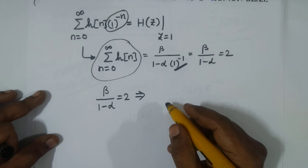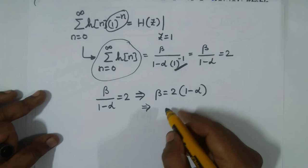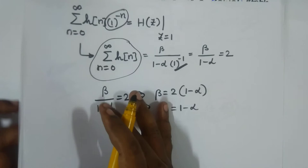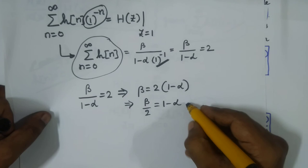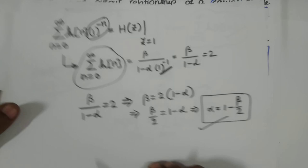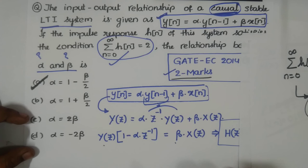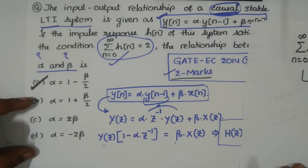From β/(1 − α) = 2, we get β = 2(1 − α), or equivalently β/2 = 1 − α. Rearranging: α = 1 − β/2. This is the first answer option, and it is the correct relationship. Two marks, very straightforward — α = 1 − β/2.